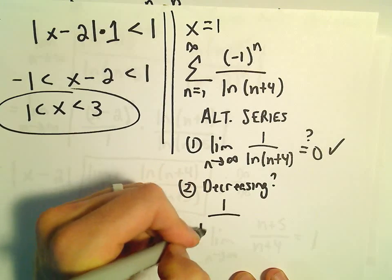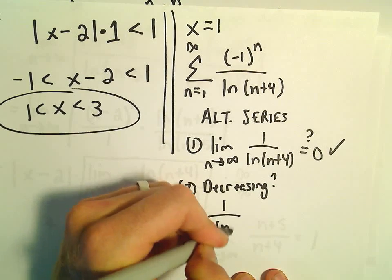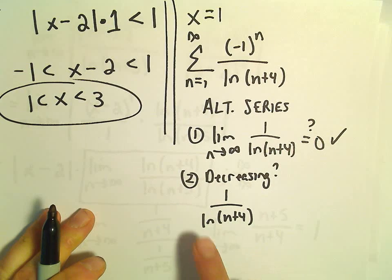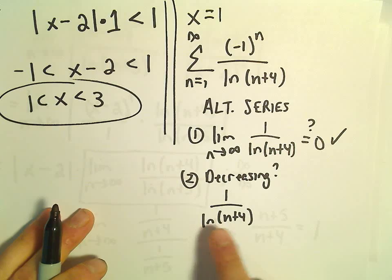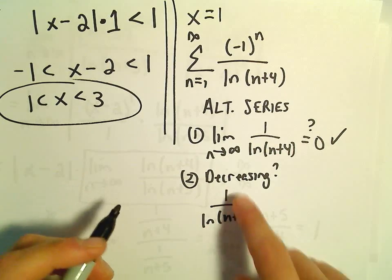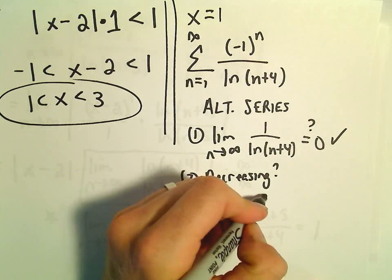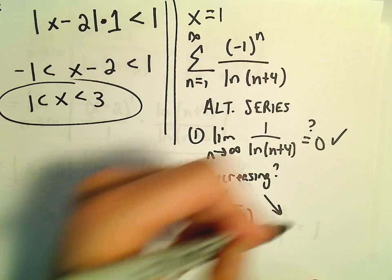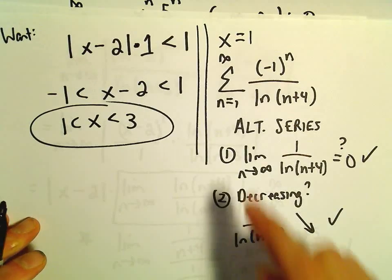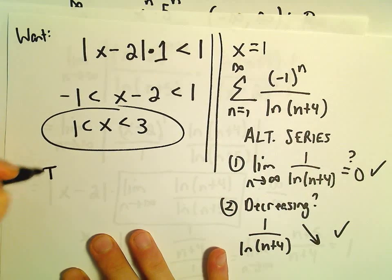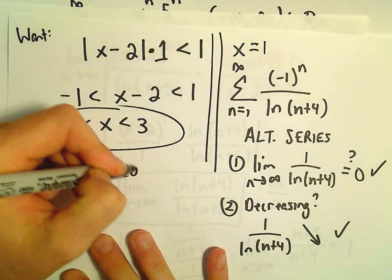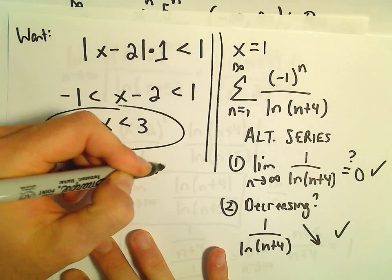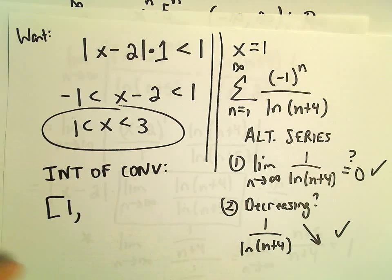As n increases, the natural logarithm of this increased value gets bigger. So 1 over a larger number, that certainly does decrease. So that tells us that our series, when we go to think about the interval of convergence, we now know that 1 would be included.